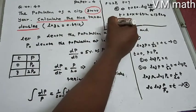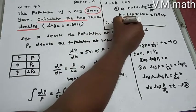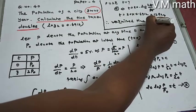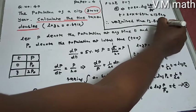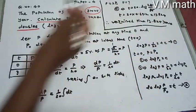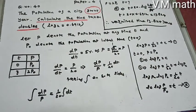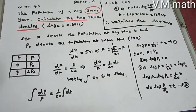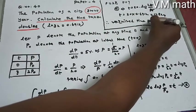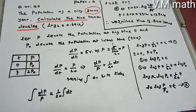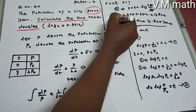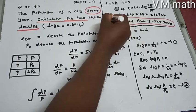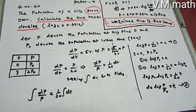Therefore, the required time is 13.824 years. This is the final answer obtained using the differential equation method. If you found this video helpful, please like this channel and this video.